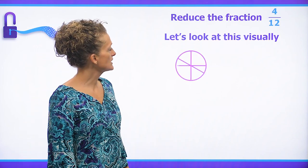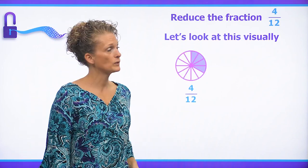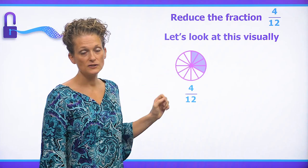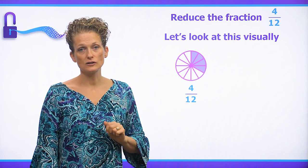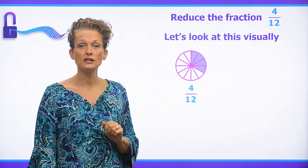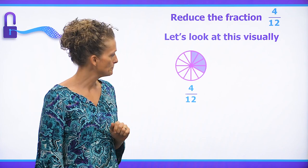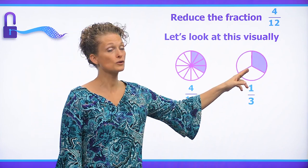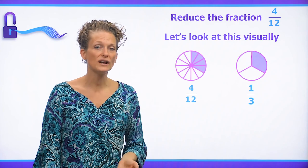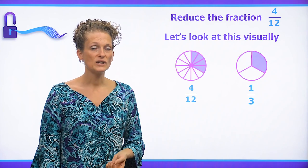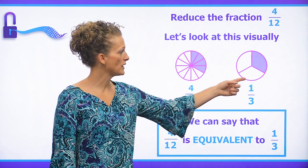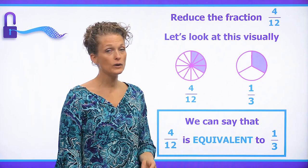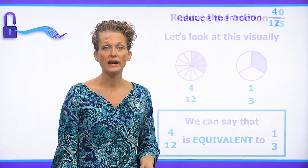Let's look at that visually to confirm we are correct. Here's our four twelfths — we divide the circle into 12 equal pieces and shade four of them. Then we divide the circle into three equal pieces and shade one of them. We can see that the same amount is shaded, so four twelfths is equivalent to one third.